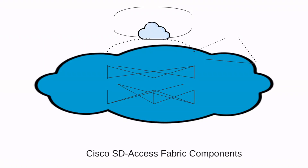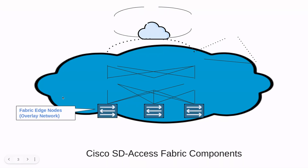In this video, we are going to go over the Cisco SD Access Fabric Components. The first component we have is the Fabric Edge Node, which is part of the overlay network for the SD Access.